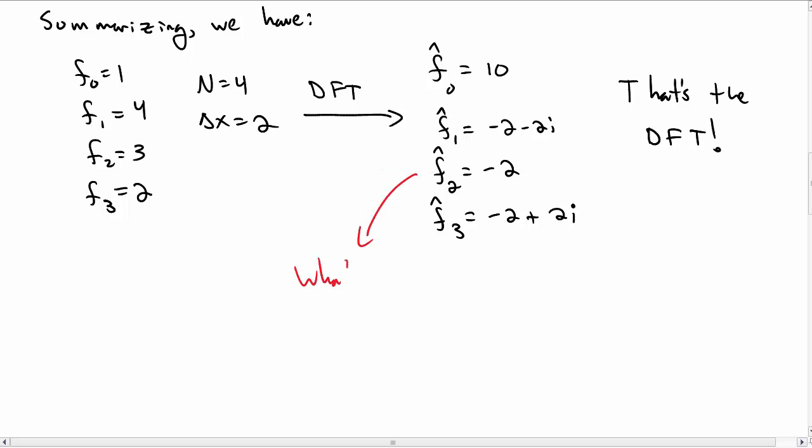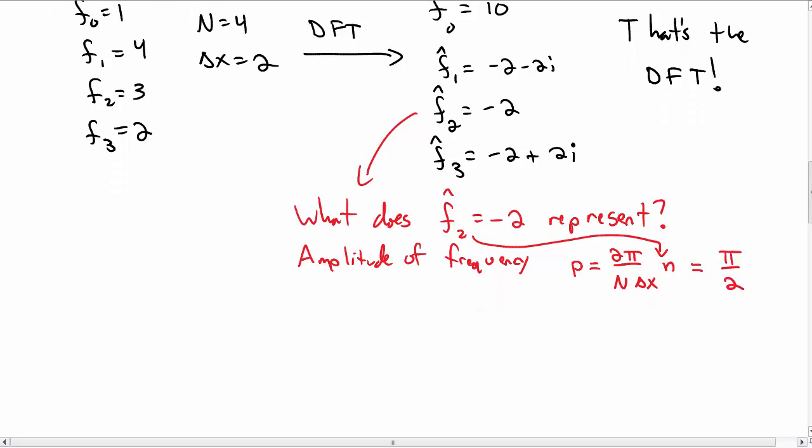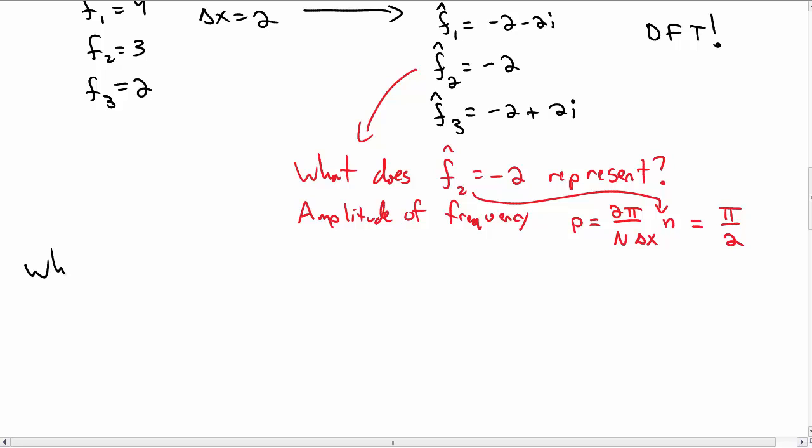But we need now to interpret this. So what does this mean? In particular, what does f hat sub 2 equal to minus 2 mean or represent? We talked about how these are the amplitudes. And so f hat sub 2 is the amplitude of the angular frequency p, which is 2 pi over big N delta x times little n, where little n here is this 2, the subscript on f hat sub 2. So angular frequency pi over 2.